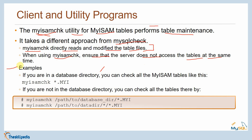When using myisamcheck, ensure the server does not access the table at the same time — therefore you must lock the table before you proceed. If you are in a database directory you can check all MyISAM tables like this: myisamcheck *.MYI. If you are not in the database directory, you can check all tables there using myisamcheck and the path to your database directory followed by *.MYI.